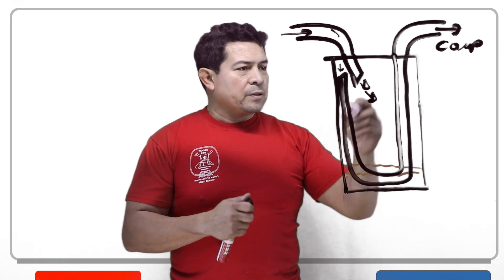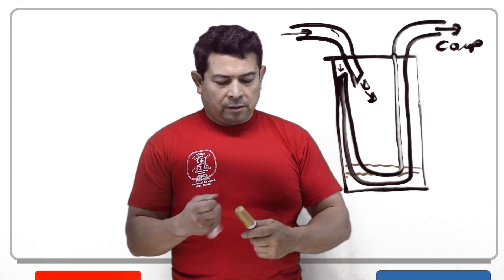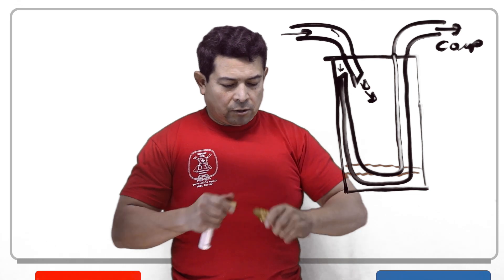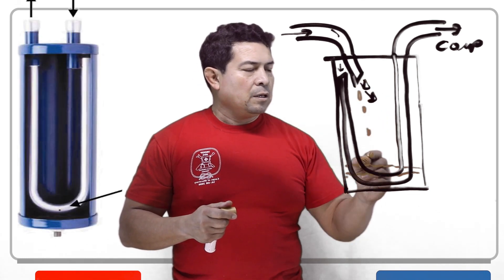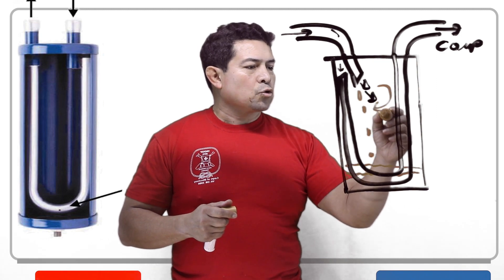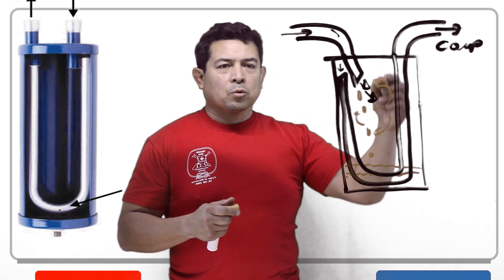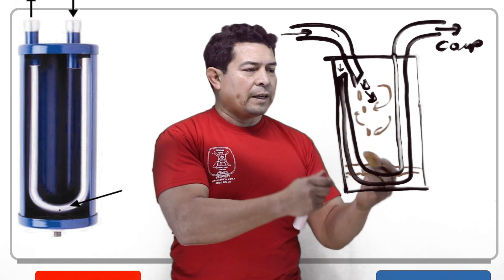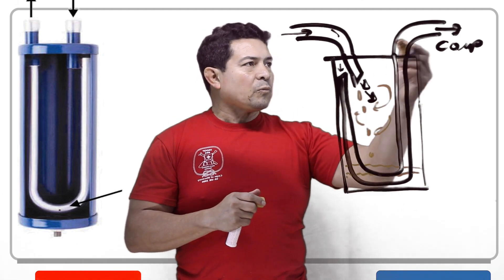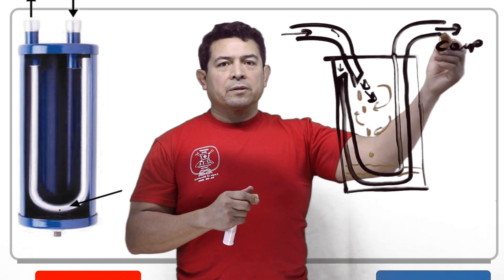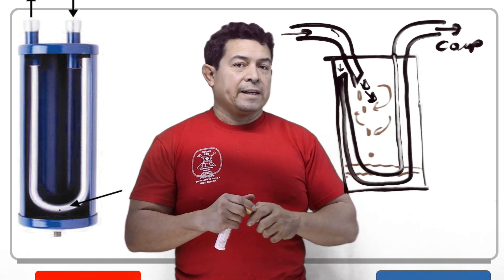So if there's any liquid refrigerant coming in, what's going to happen is it's going to get trapped — it's going to drip down and swirl around so all the droplets fall out. All of the oil that might be in here falls out and only refrigerant gas is going to be going back to the compressor.